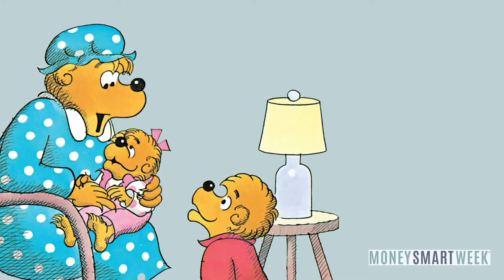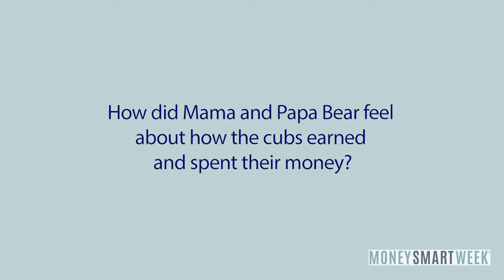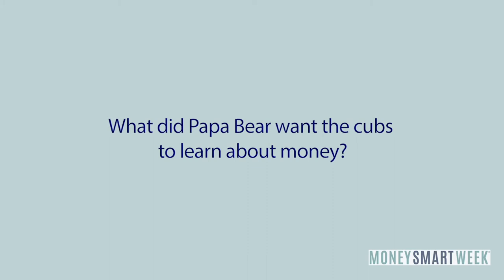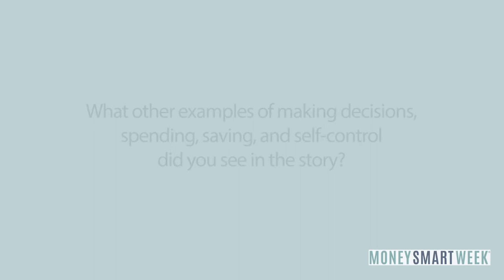How did Mama and Papa Bear feel about how the Cubs earned and spent their money? What did Papa Bear want the Cubs to learn about money? What did the Bear family do to help the Cubs learn to save money and plan ahead? What other examples of making decisions, spending, saving, and self-control did you see in the story?